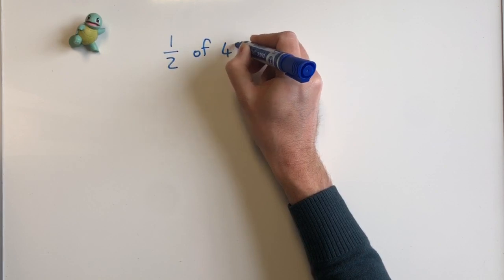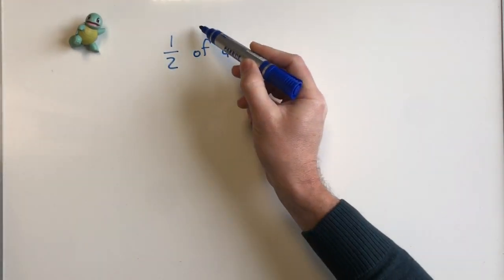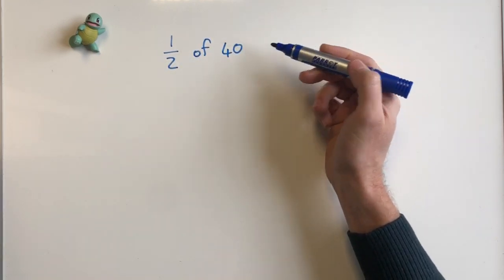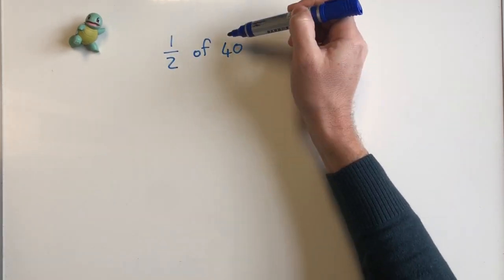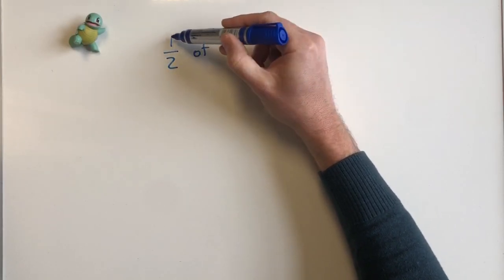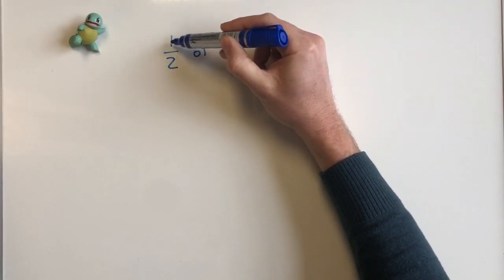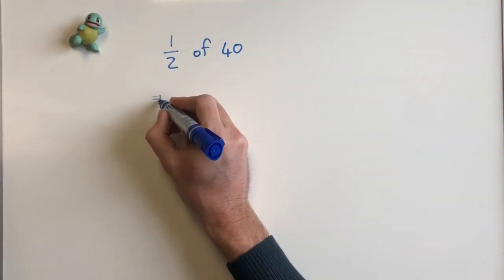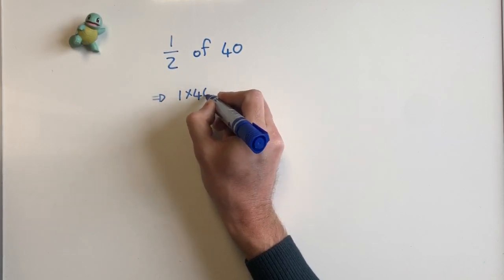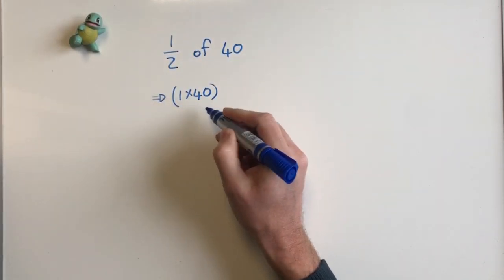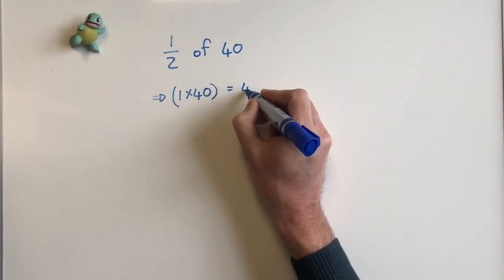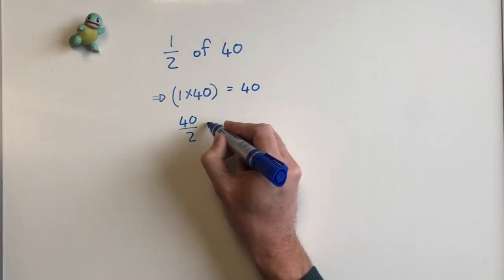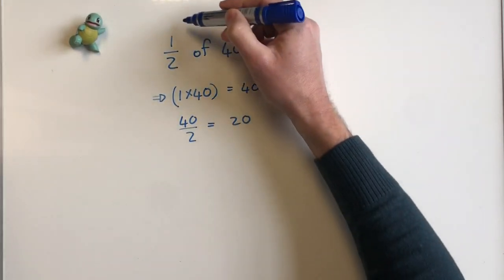There's an easy way of doing this. Obviously we know half of 40 is 20, but how we work this out mathematically is we would multiply our number with the numerator and then divide it by the denominator. So we can either do 1 times 40 and get 40, and then we say 40 divided by 2 is 20.